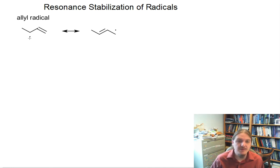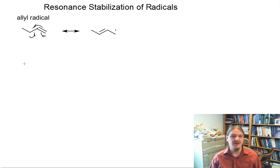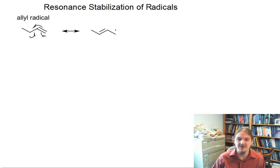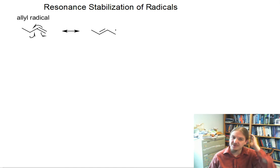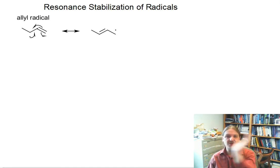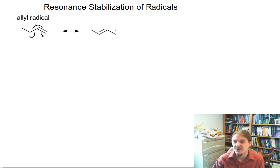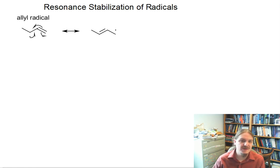We can use arrows to represent the motion of electrons, or to represent how one resonance structure might contribute or convert into another. And we're going to use the same kind of arrows when we draw radical mechanisms in a few videos.